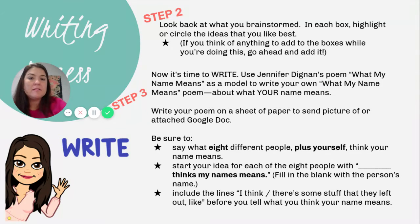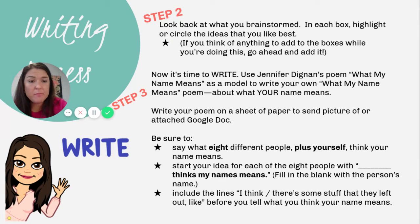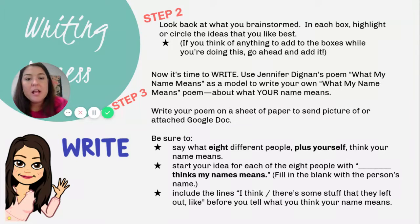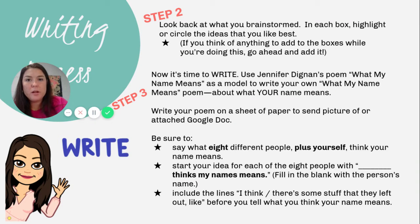You're going to use her poem as a model. You can either write it on a piece of paper and take a picture of it and send it to me, or do it on Google Doc and add doodles and images. Be sure to include eight different people plus yourself. You're going to follow the same format that the poet did and think about what your name means to different people. Start each section with 'blank thinks my name means' — so maybe 'my mother thinks my name means,' 'my stepfather thinks my name means.' Include the lines about stuff they left out, before you tell what your name really means, making sure you follow that same structure and format.